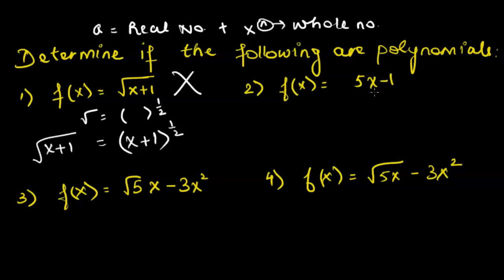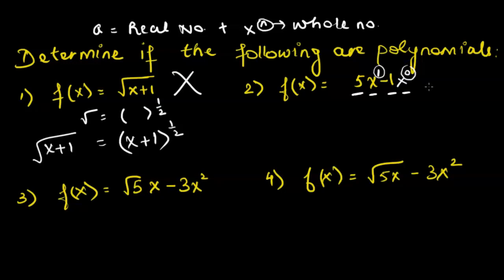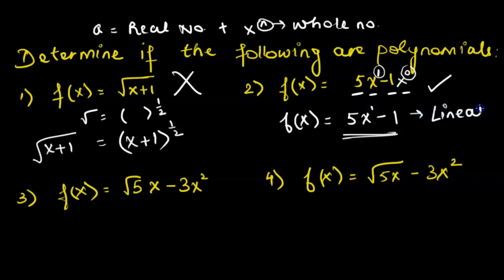Next, f(x) = 5x − 1. Here, x has an implied power of 1, and the constant term −1 means x has a power of 0. The 'a' values (5 and −1) are real numbers, and the powers (1 and 0) are whole numbers. This fulfills the definition of a polynomial. We can also conclude that a linear function is a polynomial function.